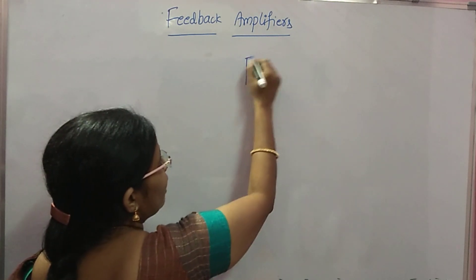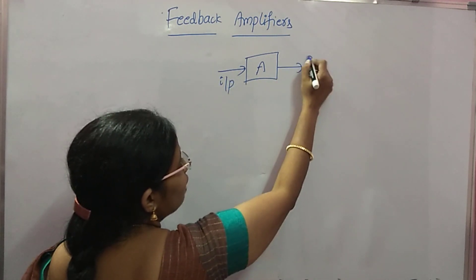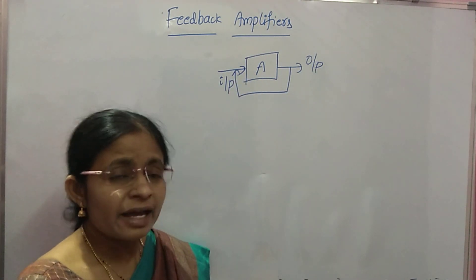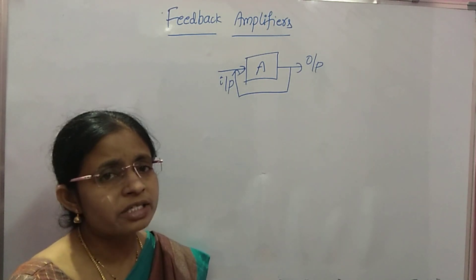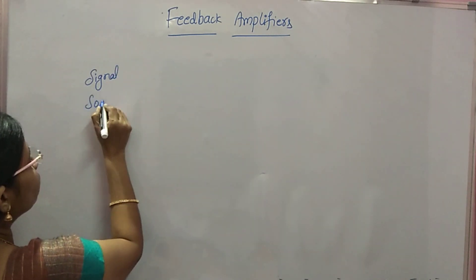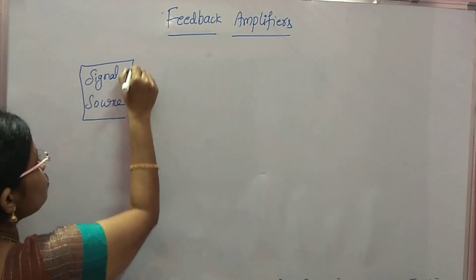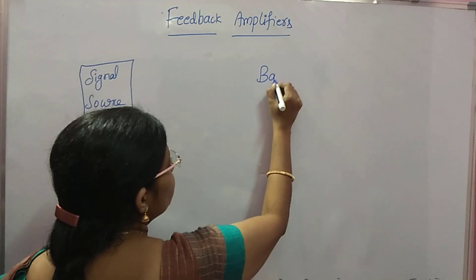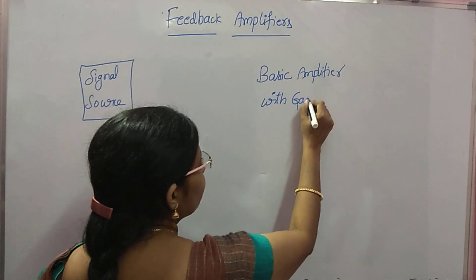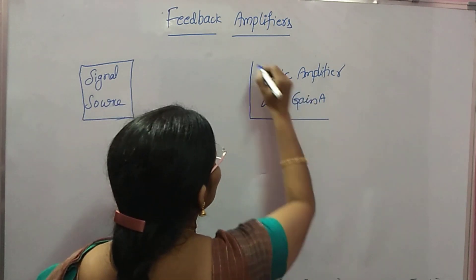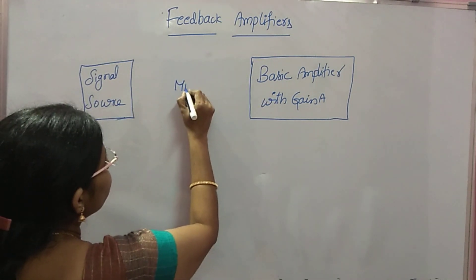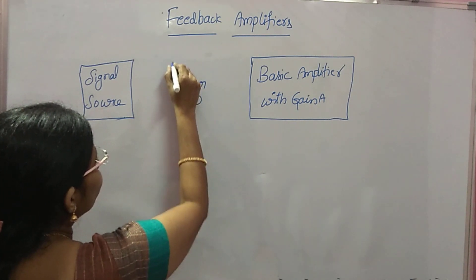What is feedback? Take an amplifier — you have an input and you have an output. Connecting the output again to the input is called feedback. Let me explain the concept of feedback with the help of a block diagram. The feedback amplifier consists of a signal source, and the main block is a basic amplifier circuit with gain A.